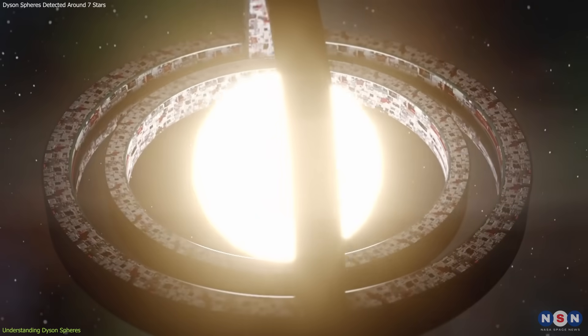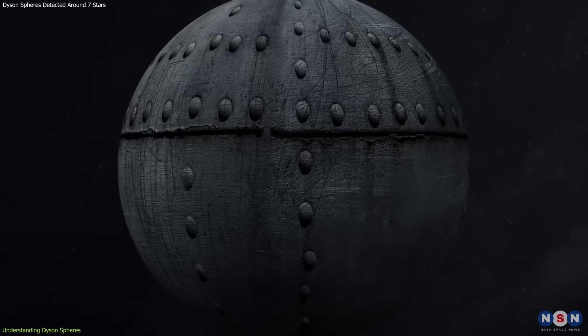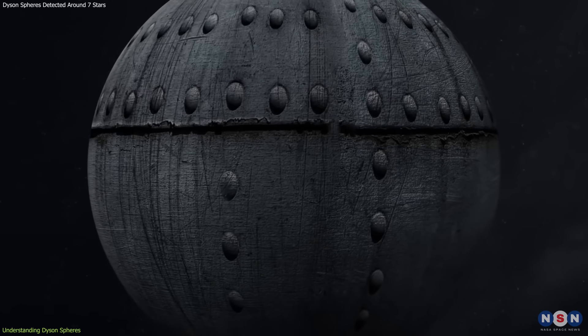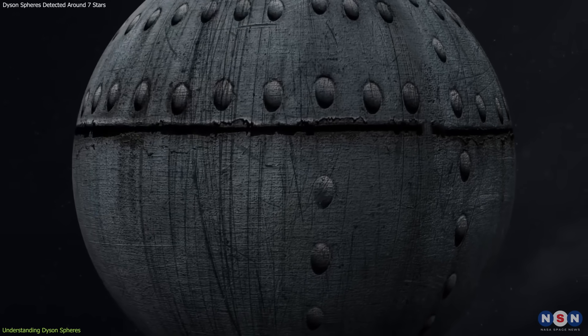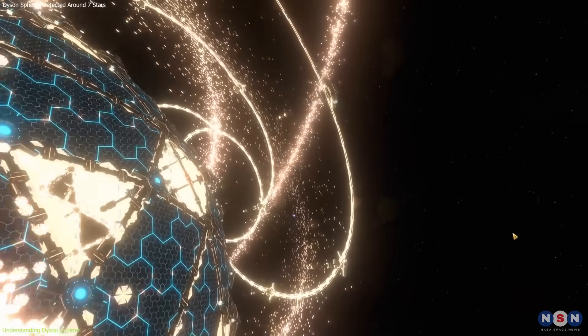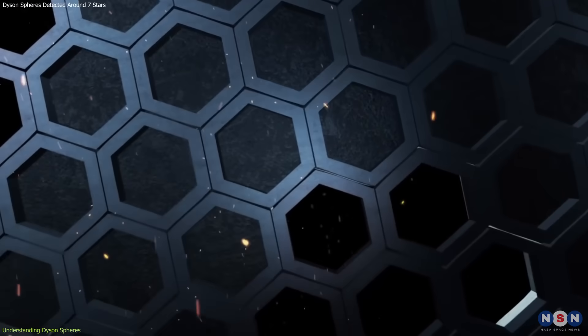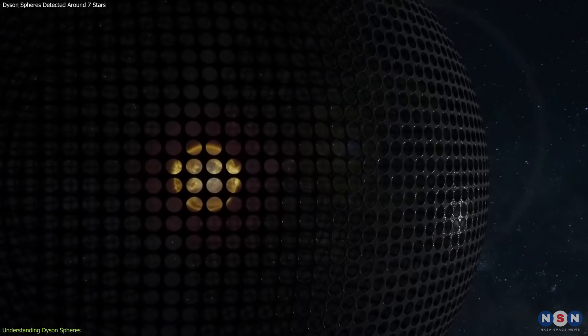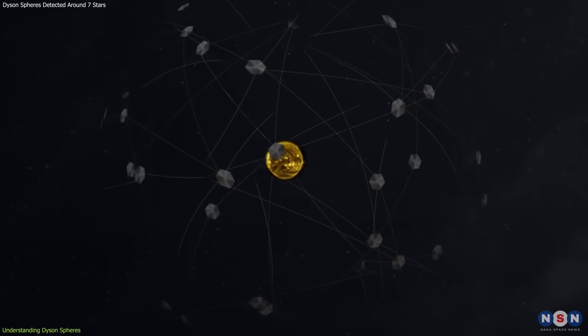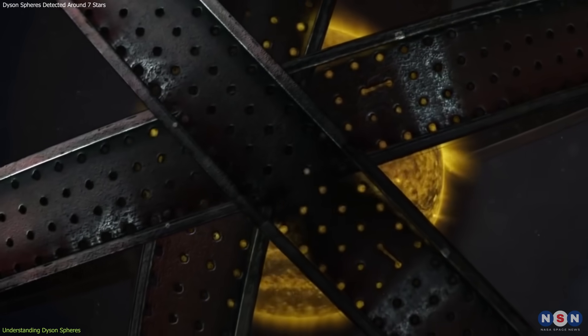A Dyson Sphere can take various forms. The most extreme version is a solid shell that encapsulates the star, capturing all of its energy output. However, constructing such a structure would be incredibly challenging due to immense engineering requirements and the need for strong materials. Therefore, other forms have been proposed, such as a swarm of solar-collecting satellites or a ring of solar panels orbiting the star. These alternatives, while still advanced, are considered more feasible than a solid shell.